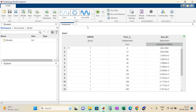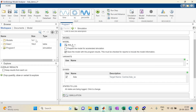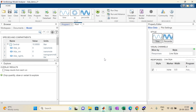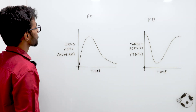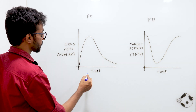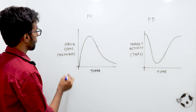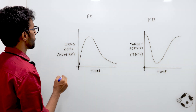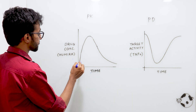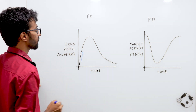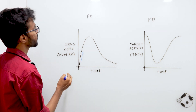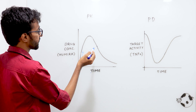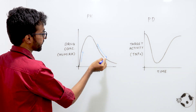We upload our existing data, select the model, and generate a concentration versus time plot. On the x-axis we are tracking time, and on the y-axis we are tracking drug concentration in systemic circulation. After the first dose is given, there is a steady increase in concentration over time due to absorption of the drug into the circulation. Once it reaches a maximum, drug clearance takes over and the drug is cleared from the body.